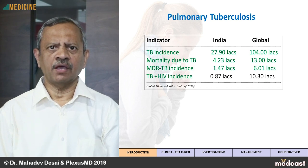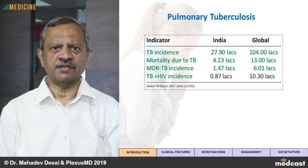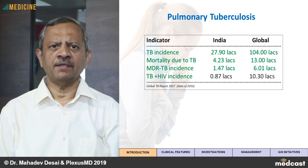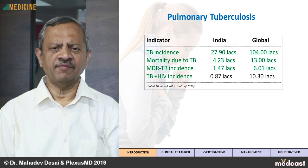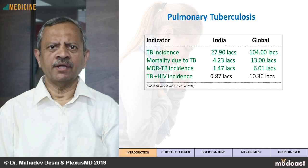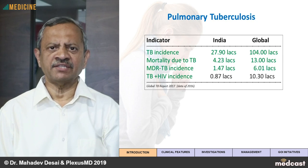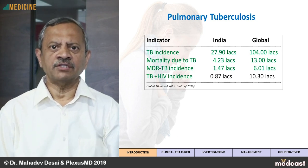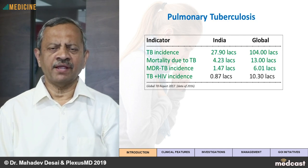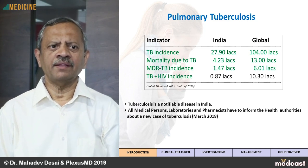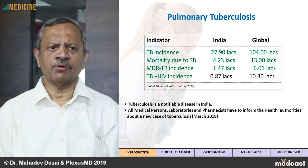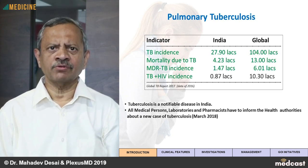The burden of tuberculosis across the globe is very high and India leads the statistics. As seen in this table, the Global Tuberculosis Report of 2017, which includes data till 2016, shows that the incidence of tuberculosis in India annually is around 28 lakhs as against the global figure of 1 crore. That means India contributes to almost 27 to 28 percent of the cases of tuberculosis. Mortality due to tuberculosis is also very high — close to more than 4 lakhs. The multidrug resistant tuberculosis incidence is also increasing and is now almost 1.5 lakhs. And co-infection of tuberculosis and HIV is to the tune of 87,000 patients a year.